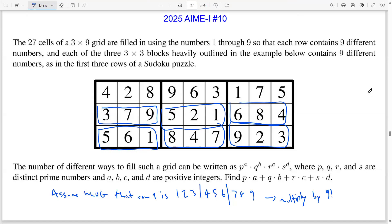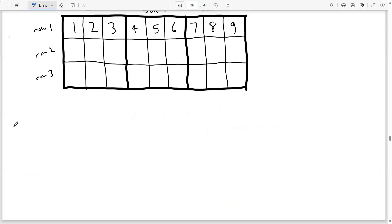With these assumptions, we can now attempt the problem. In this picture here, I drew a 3 by 9 grid, and labeled the rows 1 through 3, the boxes A through C.